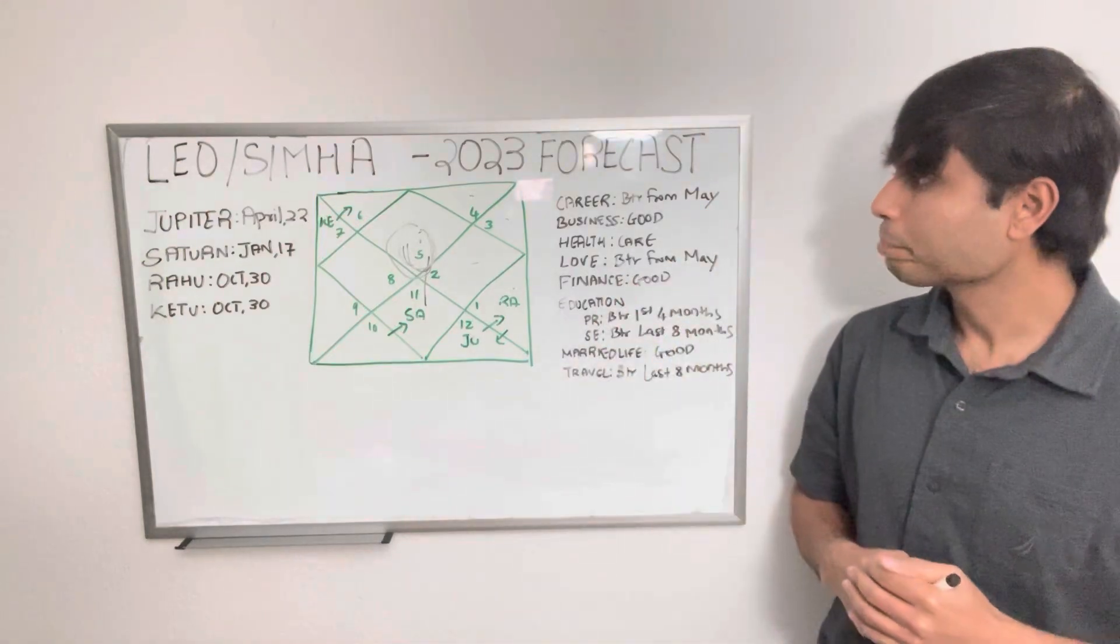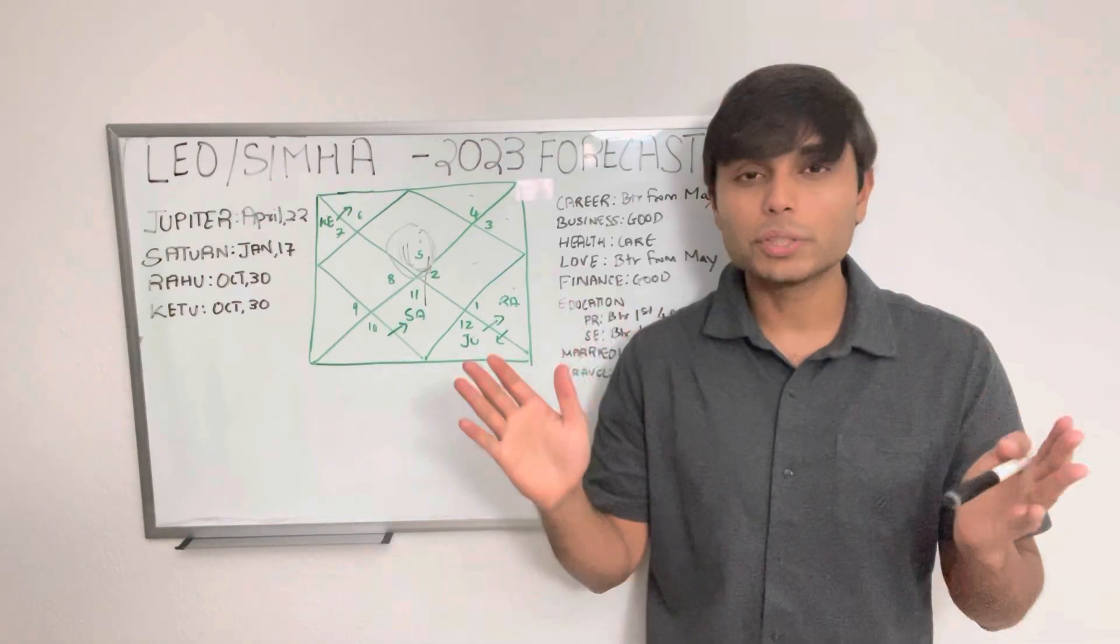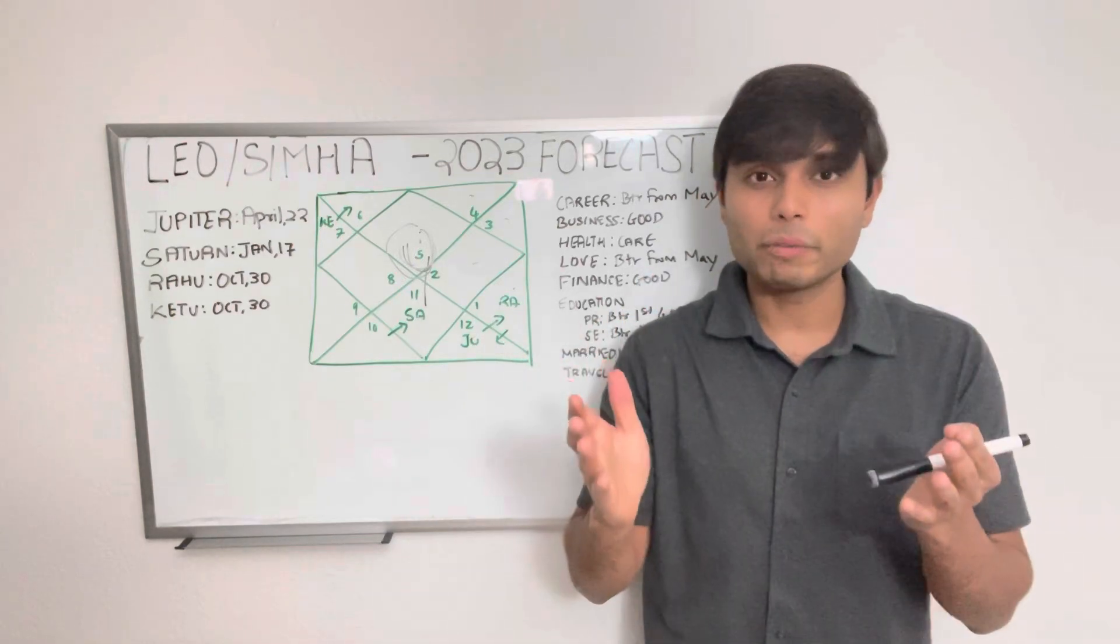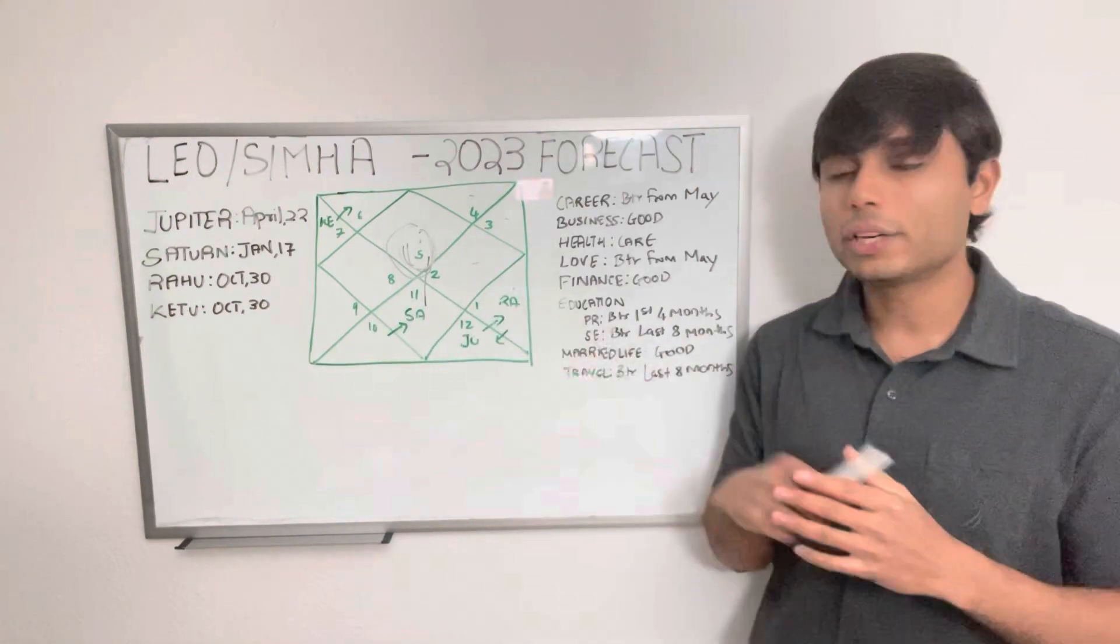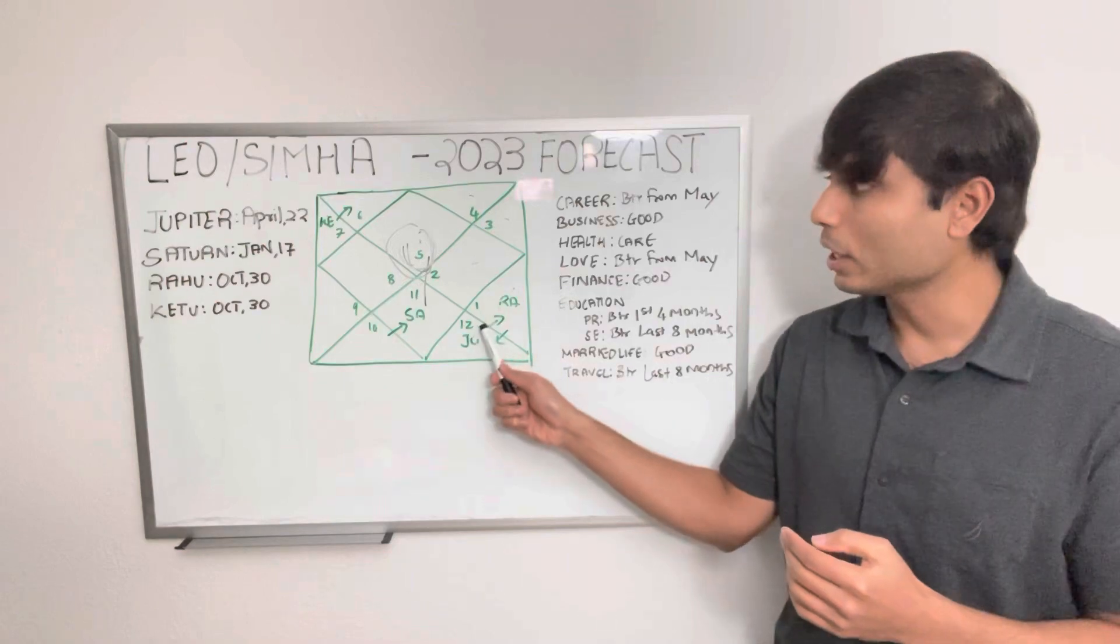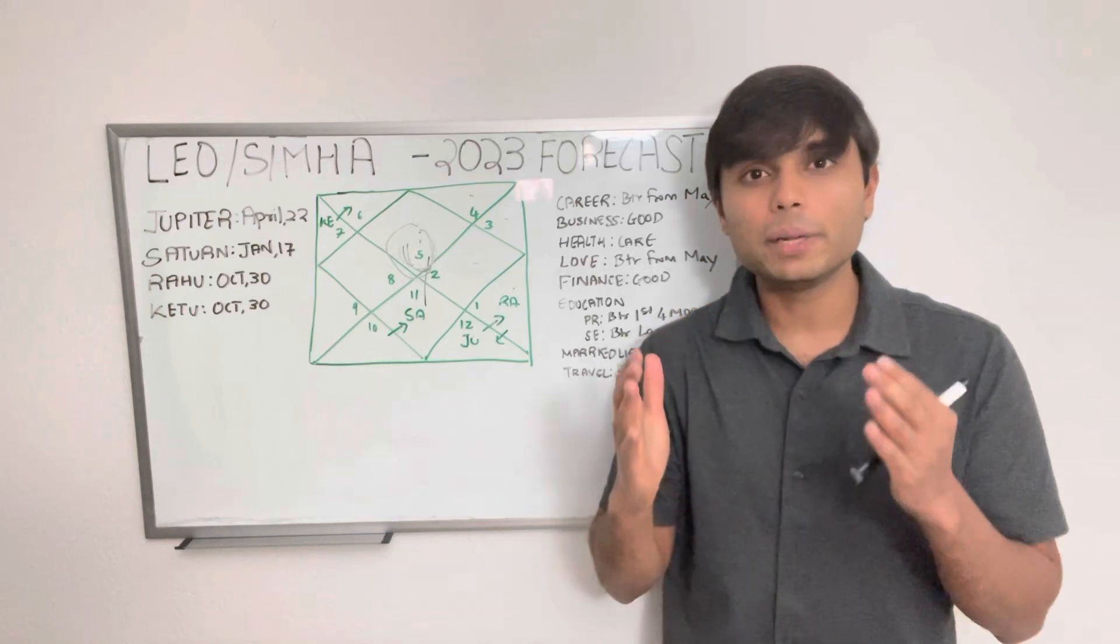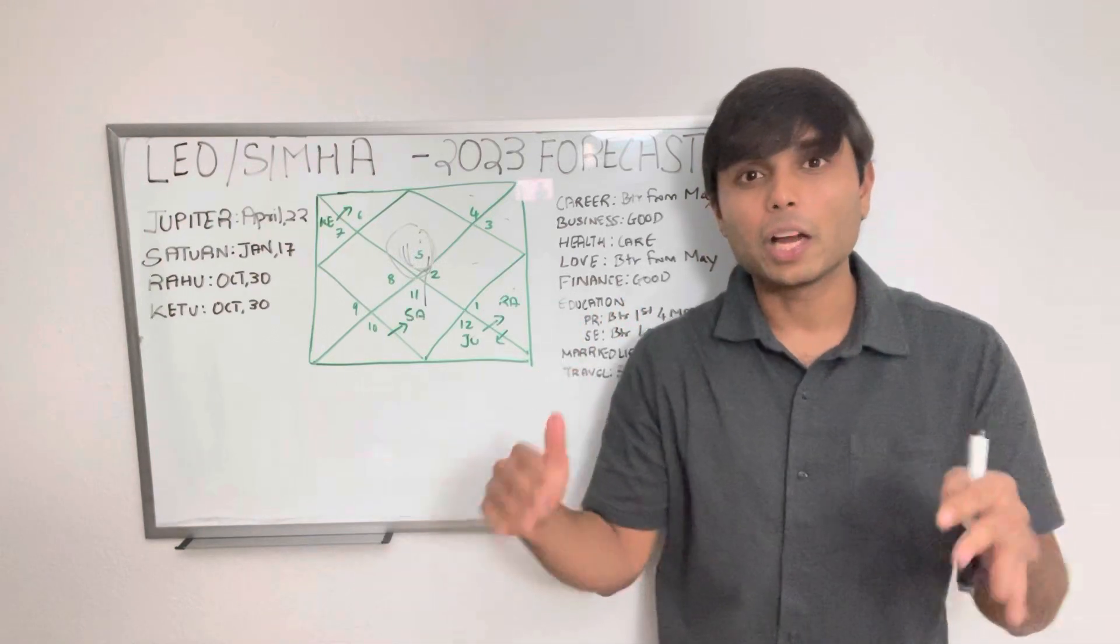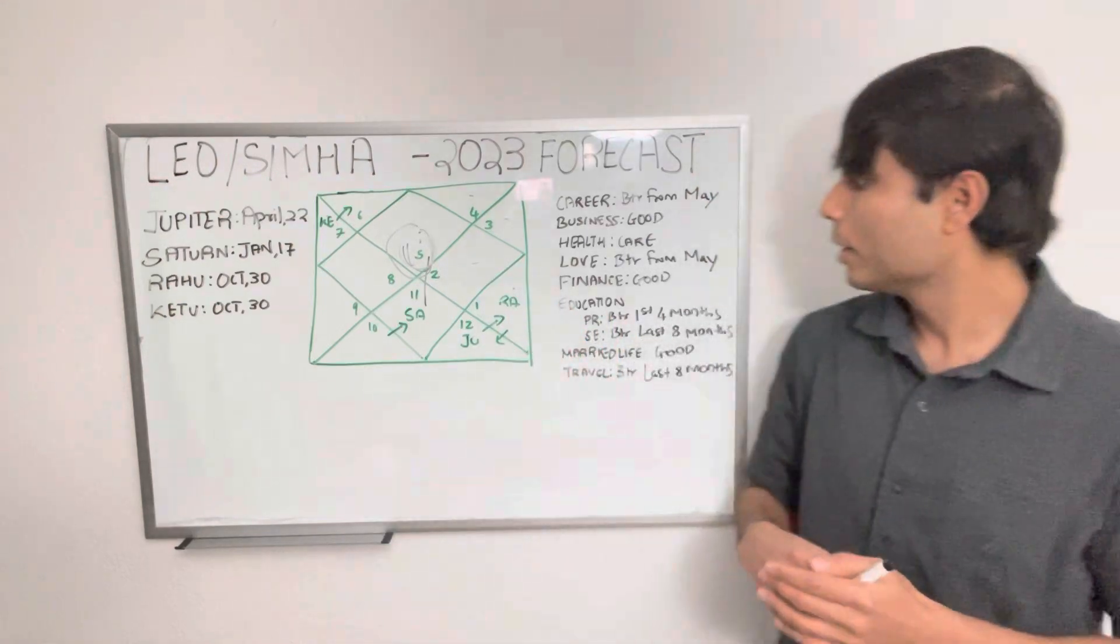If you look at finance, then overall the financial flow is looking to be good throughout the year. I do not see any major issues. Money will definitely keep coming your way because now Saturn will be in a better position, and also Jupiter will transit to your ninth house of Bhagya and destiny. Even when it's in the eighth house, it will keep aspecting your second house. So overall, the money flow will be there throughout the year. Try to save as much as possible and avoid anything too risky when it comes to financial investments.